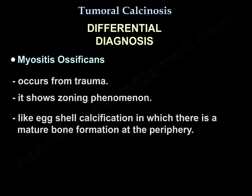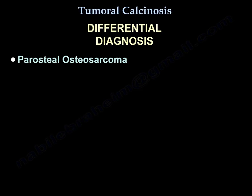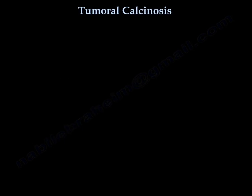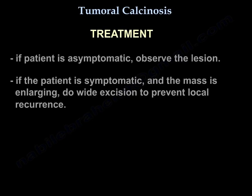Myositis ossificans occurs from trauma and shows a zoning phenomenon — an eggshell calcification with mature bone formation at the periphery. Parasteal osteosarcoma is a dense bone-forming lesion that appears stuck on the cortex of the bone, usually around the back of the knee.